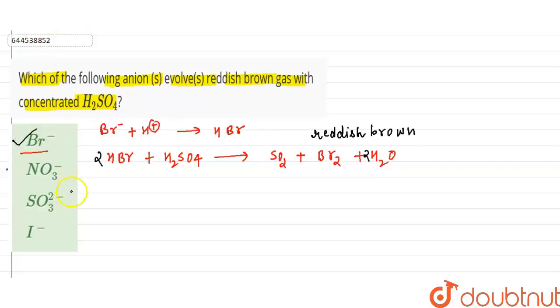Now when we go for second option, when NO2 react with sulfuric acid, NO3 minus, second one, when NO3 minus ion reacts with sulfuric acid, it gives us NO2 gas.